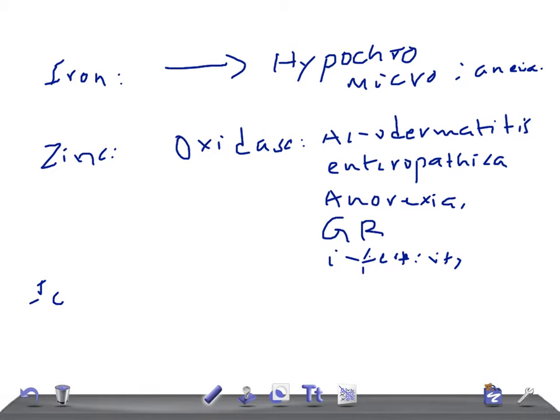Next, let's talk about iodine. Iodine is the most important component of thyroid hormones. In a previous video we discussed the synthesis and release of thyroid hormone. Here we're going to talk about what happens when there is a deficiency of iodine — it causes hypothyroidism or goiter.